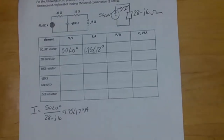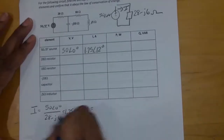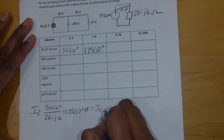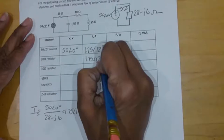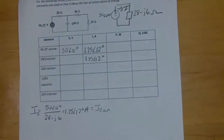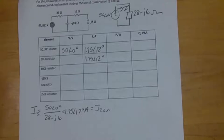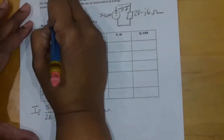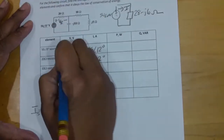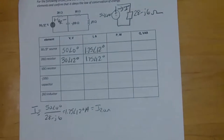Since the voltage source is in series with the 20-ohm resistor, the current for the 20-ohm resistor is also 1.75 with an angle of 12 degrees — they have the same current. 20 times 1.75 is 35, so the voltage for this resistor is 35 with an angle of 12 degrees.